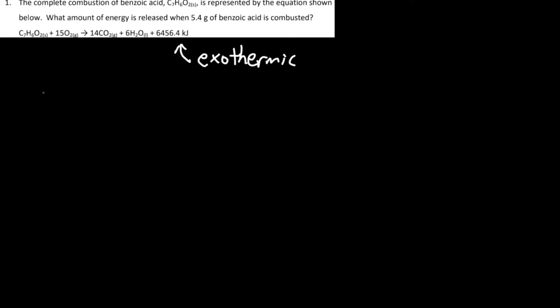So first it states that for mass it's 5.4 grams, so let's write that down. Mass equals 5.4 grams of benzoic acid. If you're wondering which one of these is benzoic acid, well it has to be C7H6O2 because O2 is oxygen, this one here is carbon dioxide, and the last one here is water.